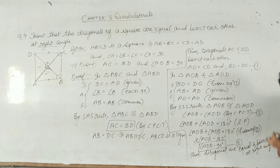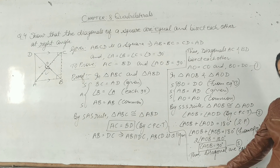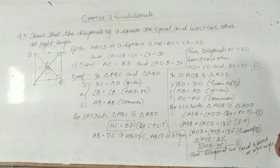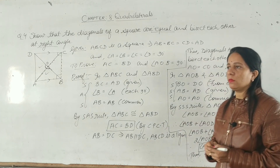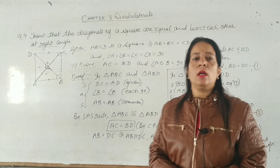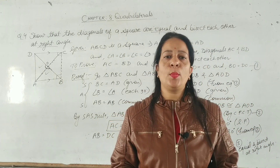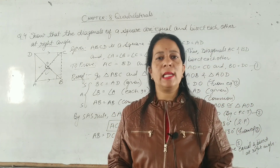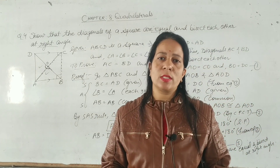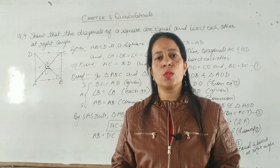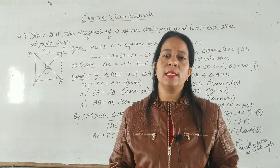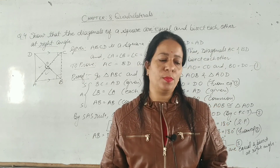Thus, diagonals are equal and bisect each other at right angles. If you liked my video, please like it, subscribe to the channel, and share the video with others. Thank you.